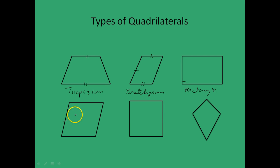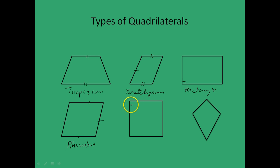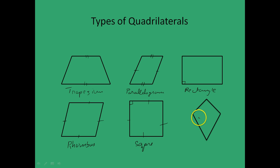This is what you call a rhombus, where all the sides are equal and these two sides are parallel, and these two are parallel. This is a square, where all angles are 90 degrees, all sides are equal, and both pairs of opposite sides are parallel. And this is a quadrilateral called a kite, where these two sides are equal and these two sides are equal.